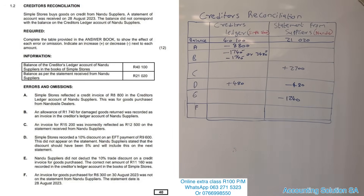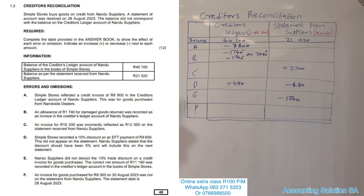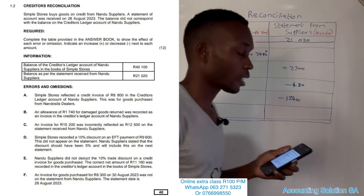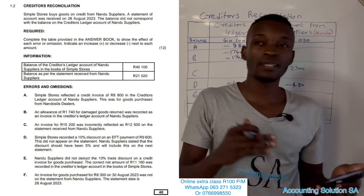Number F: An invoice for goods purchased for 6,300 was not on the statement of Nardu Supplier, and the statement date is 28 February 2023.